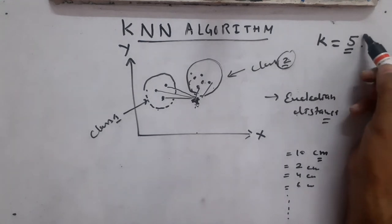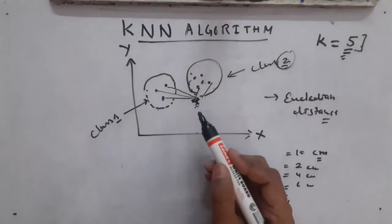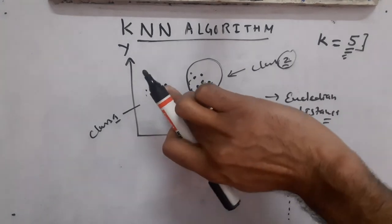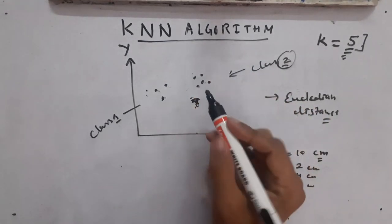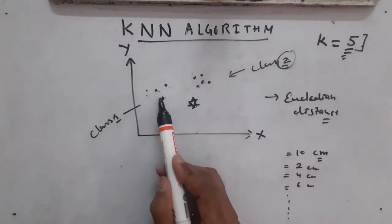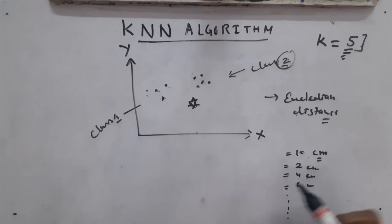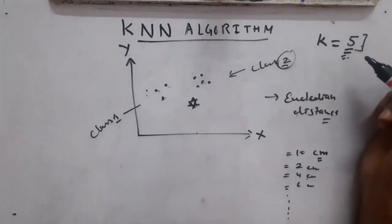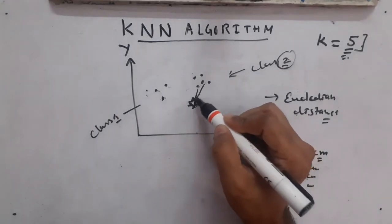Once we calculate the distances from all points, we pick the five nearest points — since we have taken k as 5. We take the five nearest data points that are closest to the new data point. Assume from this graph that three data points from one class and two from another are among the five nearest.